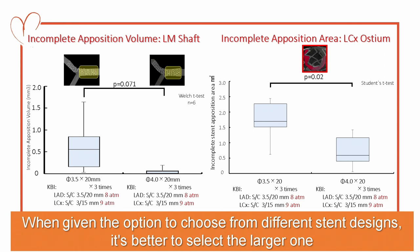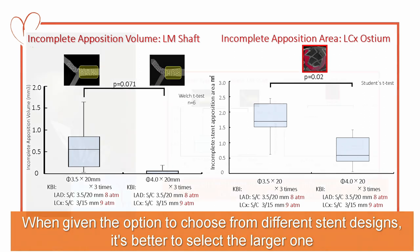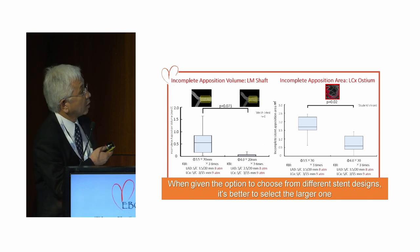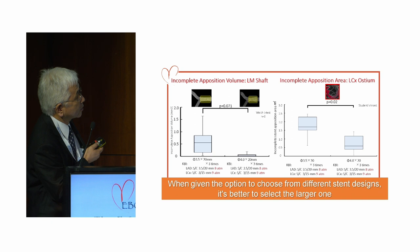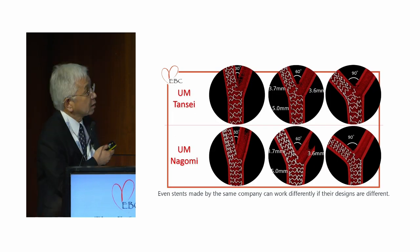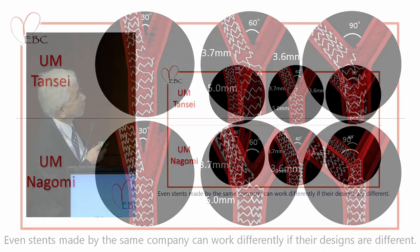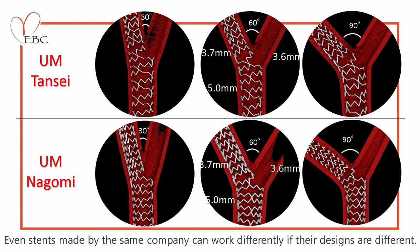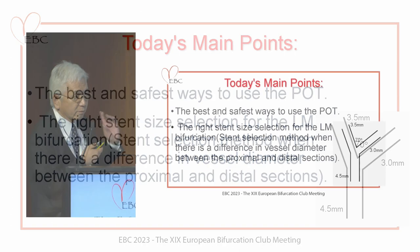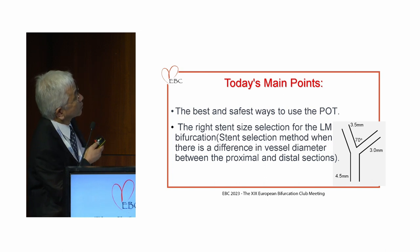Even stents made by the same company can work differently if their designs are different. When we focus on the carina side, the Tansay series is fully expanded and cannot be expanded anymore. Today's main point is discussing the best and safest way to perform POT and right stent size selection for the left-main bifurcation. I inserted the stent from the left-main to a small size bifurcation. Ultima's Nagomi has three different designs — I chose the AMOV design and the LV design — and the over-expansion capacity is different.